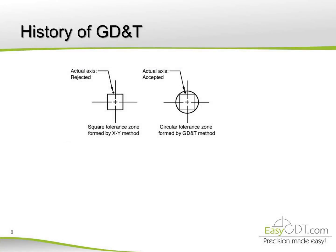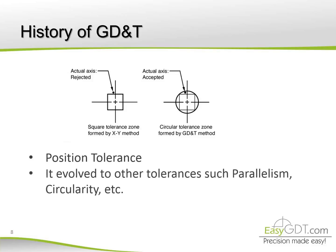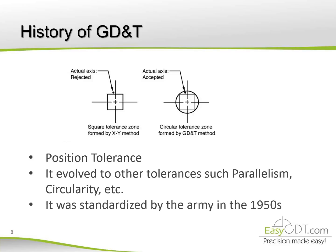After a deep analysis, it was found that the reason for these rejections was the shape of the area of acceptance, which was a square shape, when by functionality it should be circular. This is how the tolerance of position was formed. Then it evolved to other tolerances such as parallelism, circularity, etc. After that, the army standardized it.